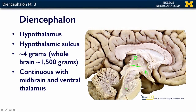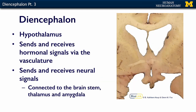You can see here that it's continuous with the midbrain. Here's our midbrain, here's our pons, and as the spinal cord becomes the brain stem and then becomes the diencephalon, it merges with the hypothalamus. The hypothalamus sends and receives all kinds of signals — hormonal signals — and it is also connected to the rest of the brain with axons, just like every other neural structure.